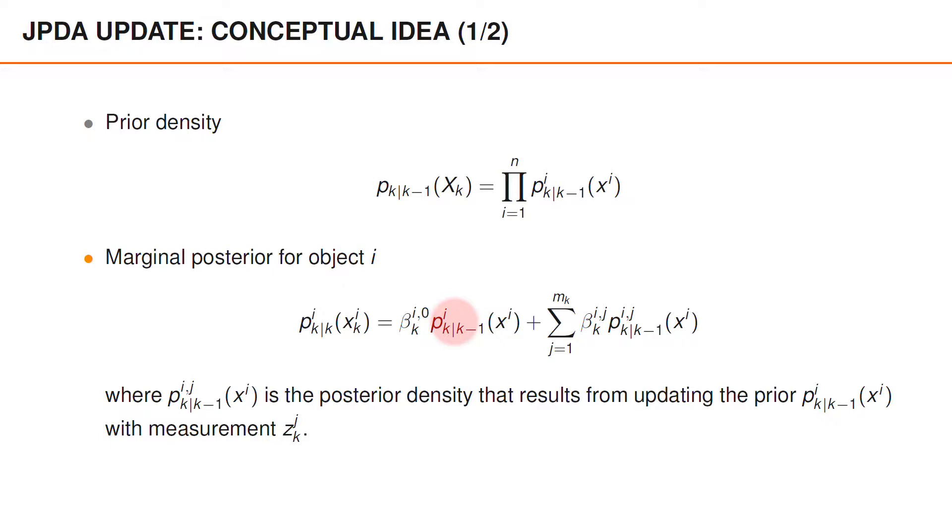Because without a detection there is nothing to update the prediction with. And then we add a sum over all measurements, where we have beta i j times the posterior density that results from updating the prior for object i with measurement j.